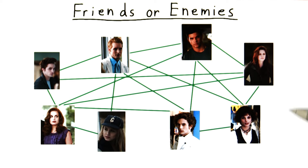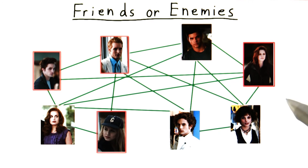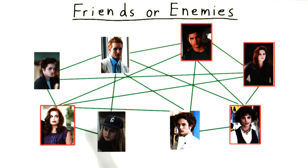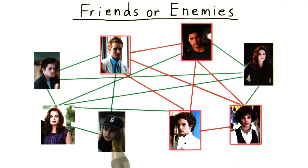Remember that if any sequence of configurations accepts, then the non-deterministic machine accepts. One branch of computation might choose these 4, and then reject because it's not a clique. Another branch of computation might choose these 4, and also reject. But one branch will choose the correct subset, and this will accept, and that's all we need. If one branch accepts, then the whole non-deterministic machine accepts as it should. There is a clique of size 4 here.